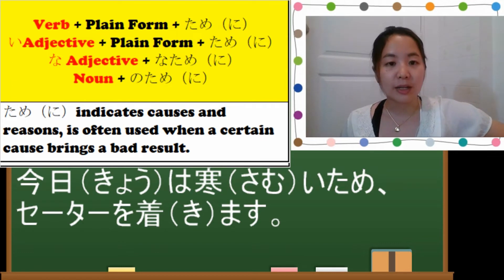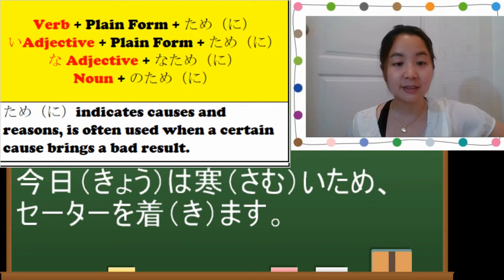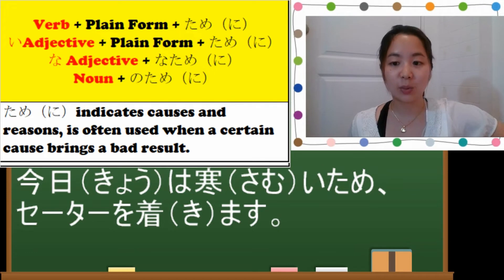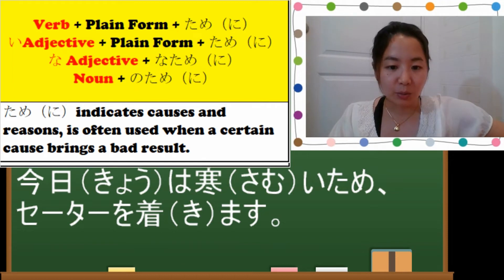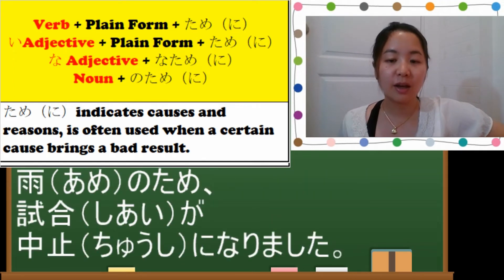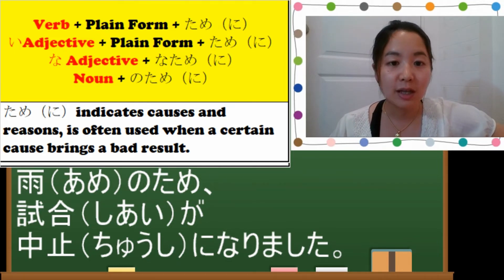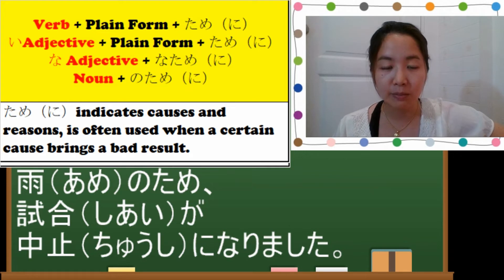For example, another one is since it is raining, the match was cancelled. Ame no tame shiai ga chuushi ni narimashita. So this ame is a noun, so you put no tame and then shiai is match. Chuushi ni narimashita became cancelled.